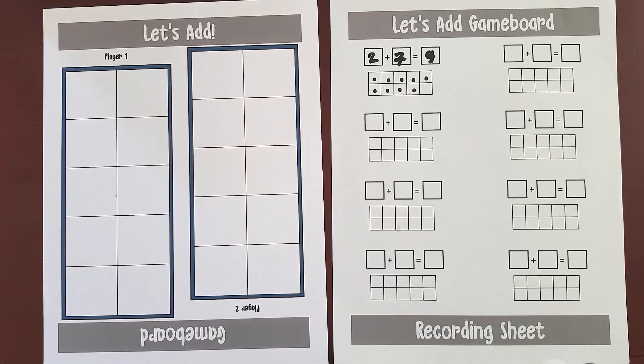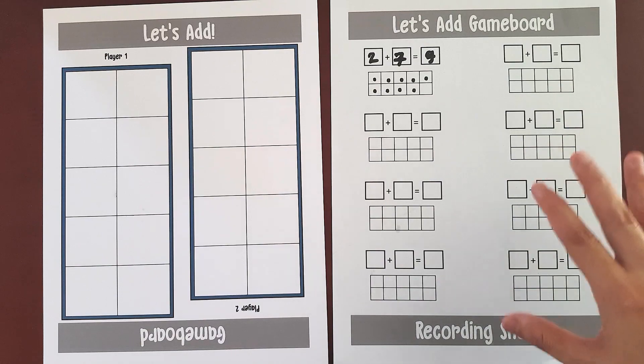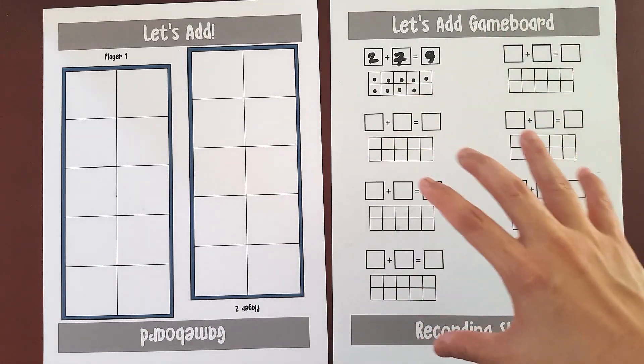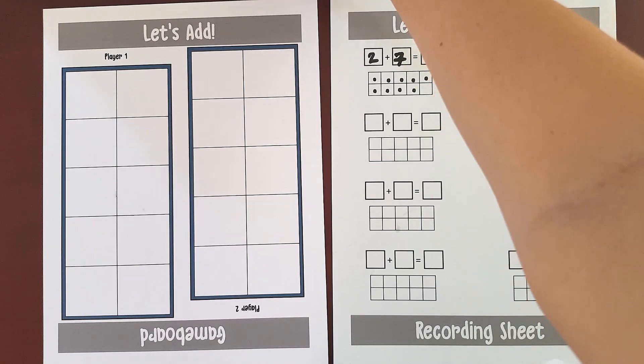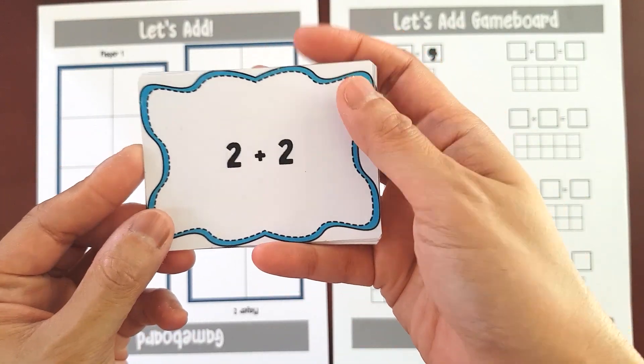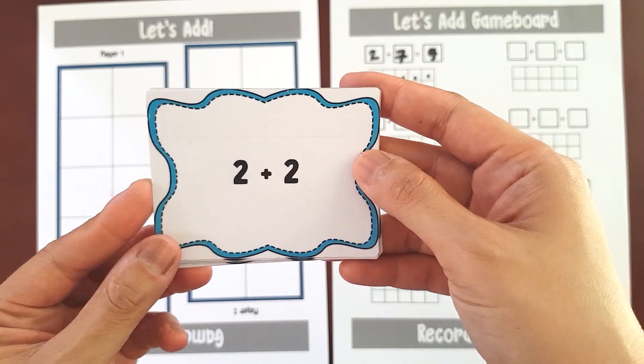Here in this activity, we need this Let's Add game board. So we have player 1 and player 2. They'll play together with this game. And then this one is the recording sheet. Each player will receive this recording sheet where they'll record their answers to the addition problem. And then we have the cards. These are the cards they need to solve and figure out. So let's say for example this one, 2 plus 2.